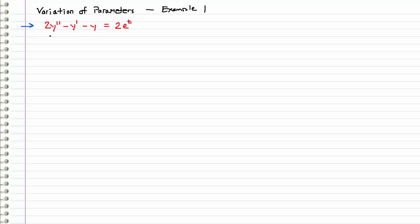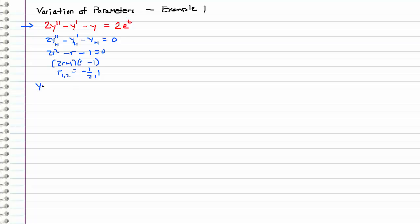The first step, as always, is to find the homogeneous solution. So we will be solving this equation set equal to zero. We can jump straight into the characteristic equation and factor it. We have real roots r1 and r2 equal to negative one-half and one, which gives us a general form for our homogeneous solution of c1 e to the negative one-half t plus c2 times e to the t.